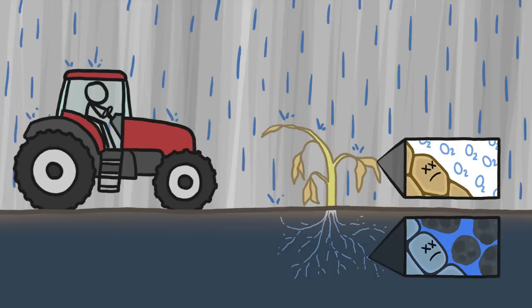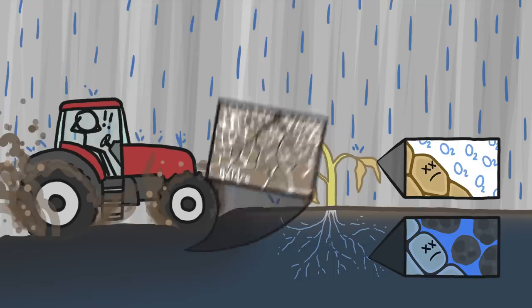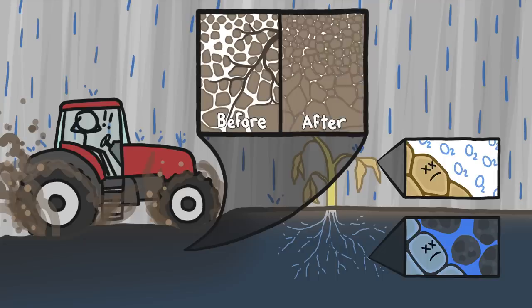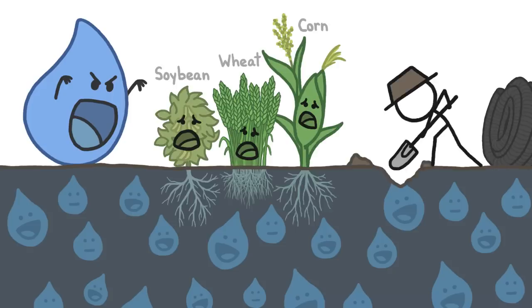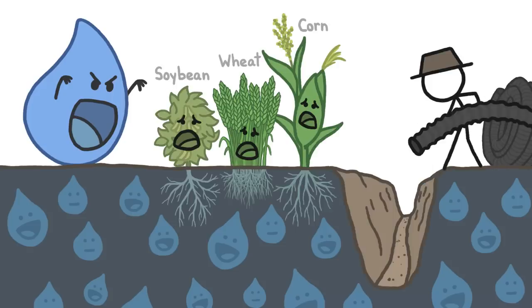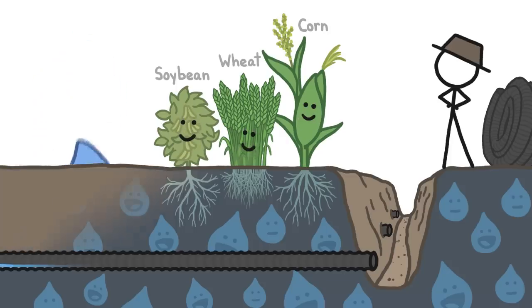Plus, wet fields cause tractors to get stuck and to compact the soil, which reduces both the amount of air in the soil and the space for roots to grow. To save their crops from these problems, farmers around the world have dug ditches and installed special underground pipes to drain excess water away.